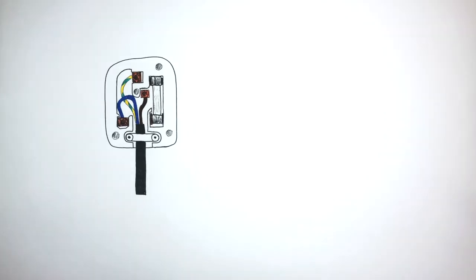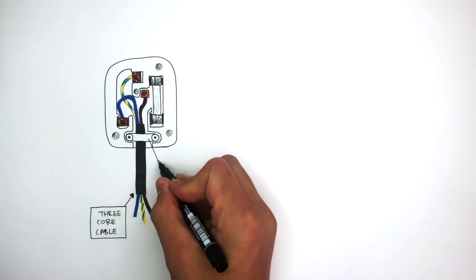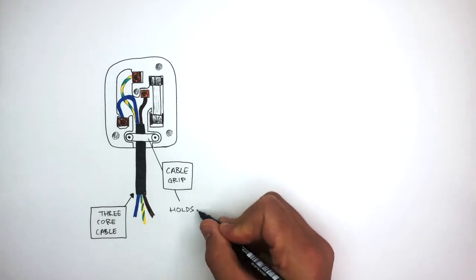It melts and stops the electric current from flowing if it becomes too high. So this is the three core cable which we know contains the neutral wire, the earth wire, and the live wire. And this is the cable grip which holds the cable in place.